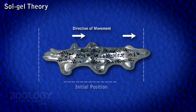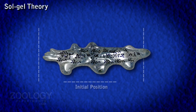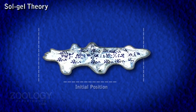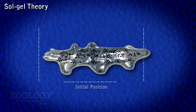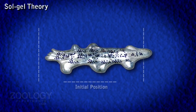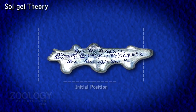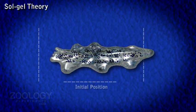According to this theory, the cytoplasm of amoeba is differentiated into a clear outer ectoplasm and a granular inner endoplasm. The latter is further distinguished into an outer stiffer, jelly-like region called the plasma gel, and an inner fluid region called the plasma sol.